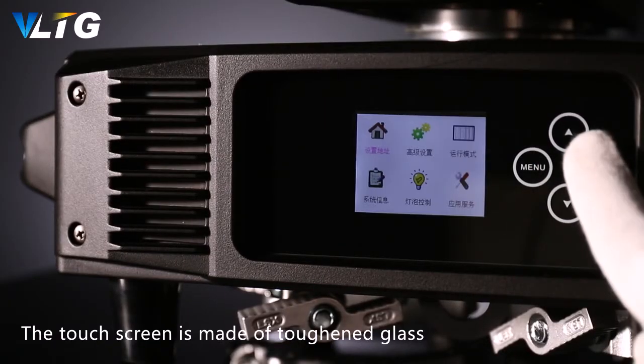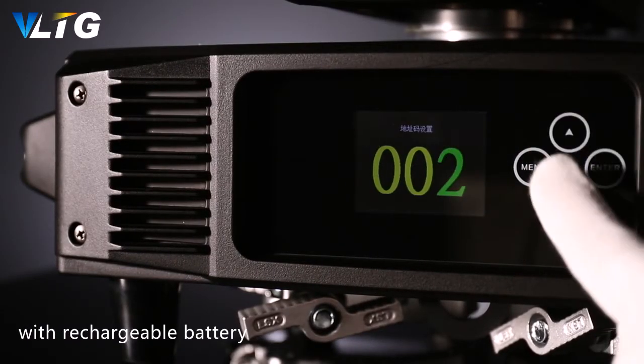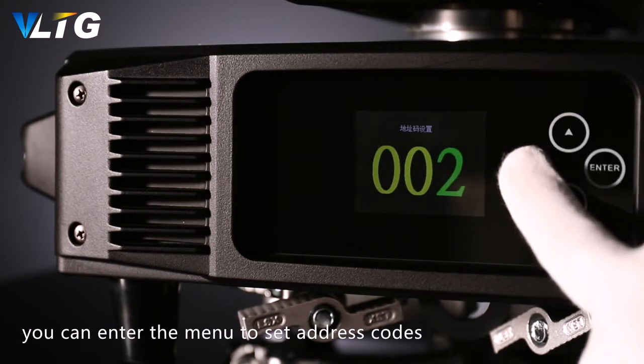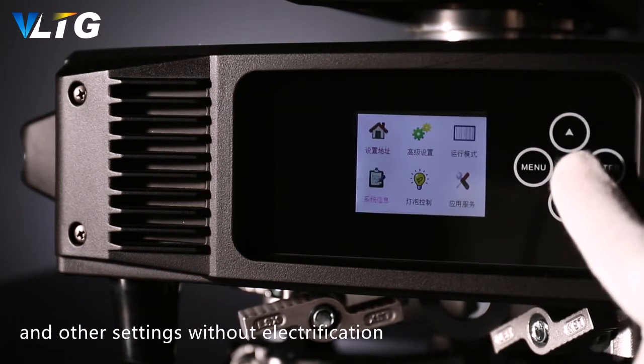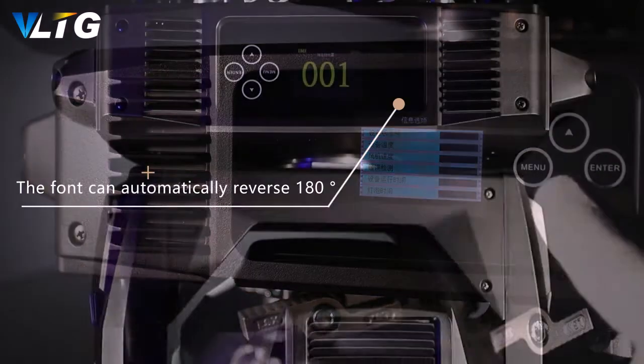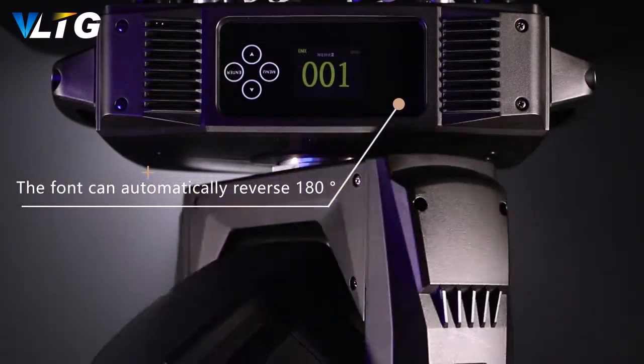The touchscreen is made of toughened glass. With a rechargeable battery, you can enter the menu to set address codes and other settings without electrification. The font can automatically reverse 180-degree display, convenient for beam-hanging operation.